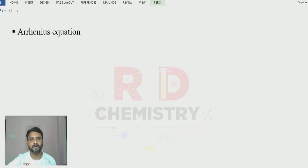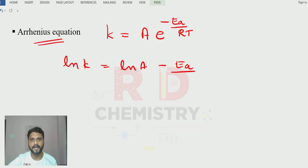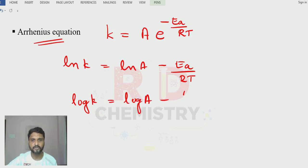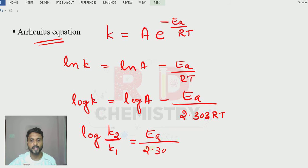The Arrhenius equation states: K = A · e^(−Ea/RT), where Ea is the activation energy, A is the Arrhenius constant, R is the universal gas constant, and T is temperature in Kelvin. Taking ln on both sides: ln K = ln A − Ea/RT. In log form: log K = log A − Ea/(2.303 RT). When temperature changes, K changes: log(K₂/K₁) = (Ea / 2.303R) · (T₂ − T₁) / (T₁ · T₂).